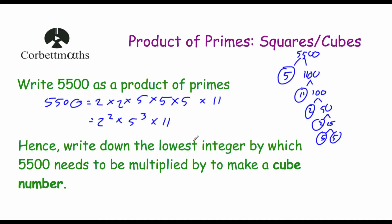We need to find the lowest integer by which 5,500 needs to be multiplied by to make a cube number. We need 2 to the power of 3, so we need one more 2. The 5s are already 5 to the power of 3, which is great. And 11 is 11 to the power of 1, so we need to multiply by 11 squared. So our multiplier is 2 times 11 times 11 equals 2 times 121 equals 242. Multiplying 5,500 by 242 gives 1,331,000, which is a cube number.